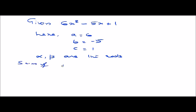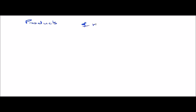Sum of the roots, alpha plus beta is equal to minus b over a, which is equal to 5 by 6. And alpha times beta is equal to c by a, which is equal to 1 by 6.